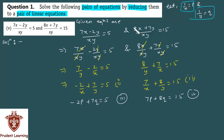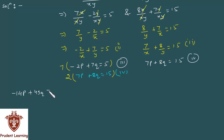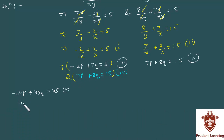I will solve using the elimination method. Multiplying the third equation by 7, we get minus 14p plus 49q is equal to 35. This becomes the fifth equation. The fourth equation remains 7p plus 8q is equal to 15.